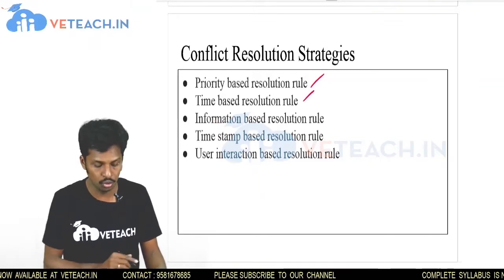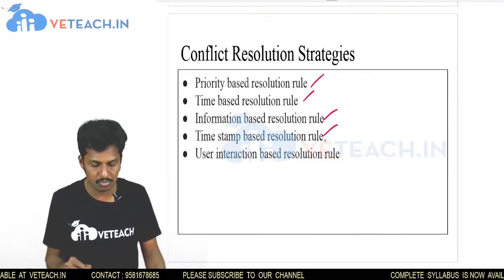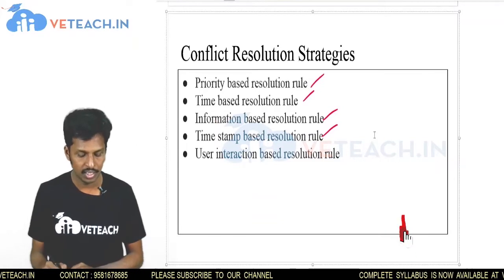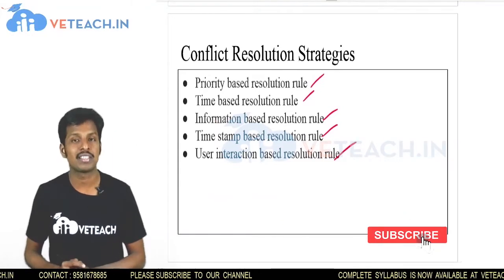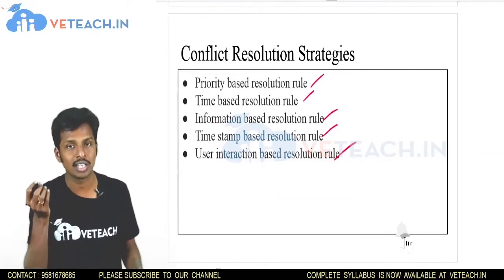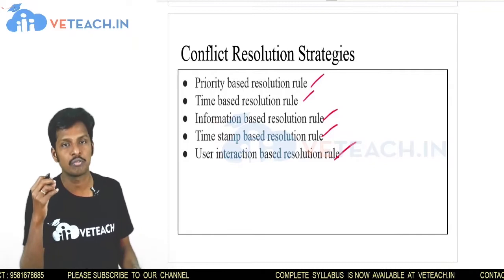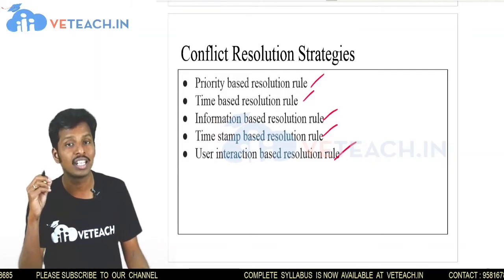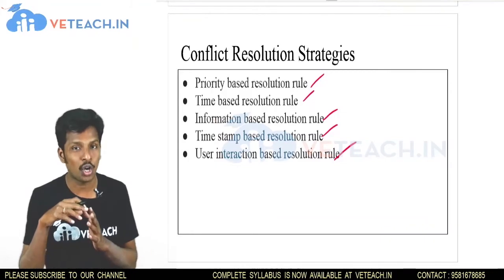There are different conflict resolution strategies: priority-based resolution rule, time-based resolution rule, information-based resolution rule, timestamp-based resolution rule, and user interaction-based resolution rule. Using these rules, any conflicts that occur during synchronization can be resolved.